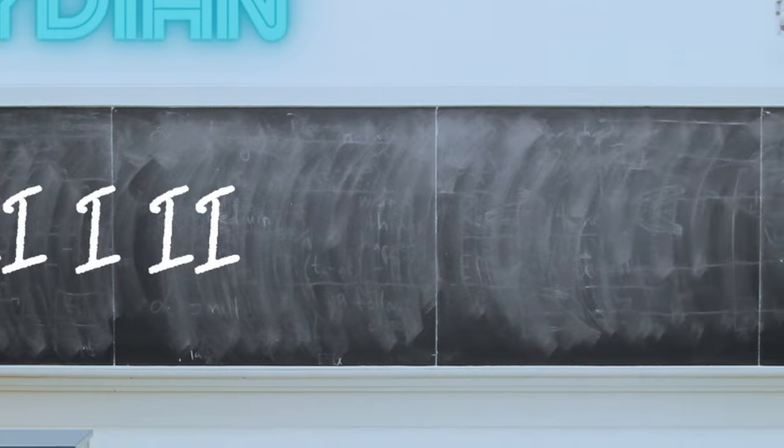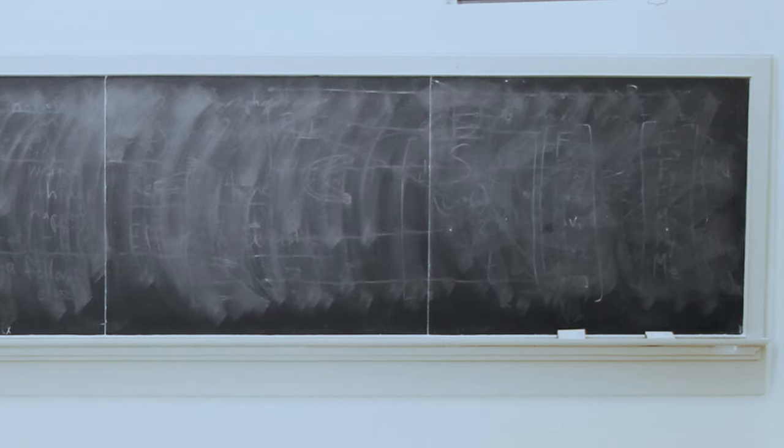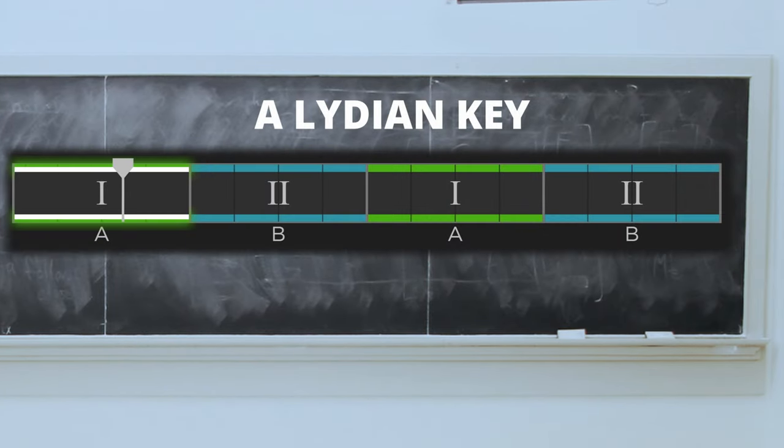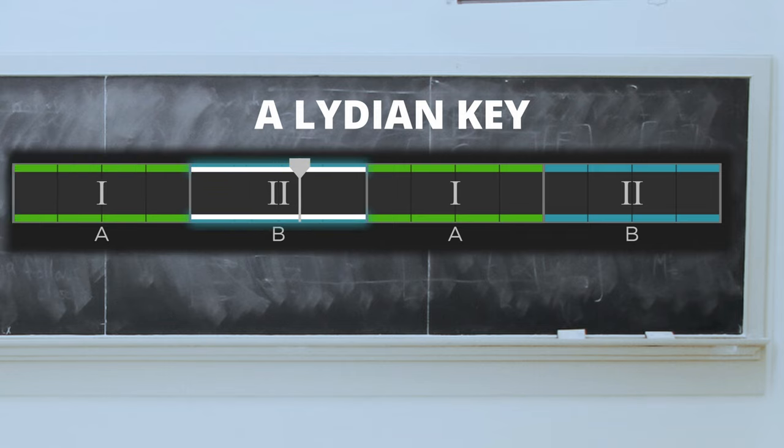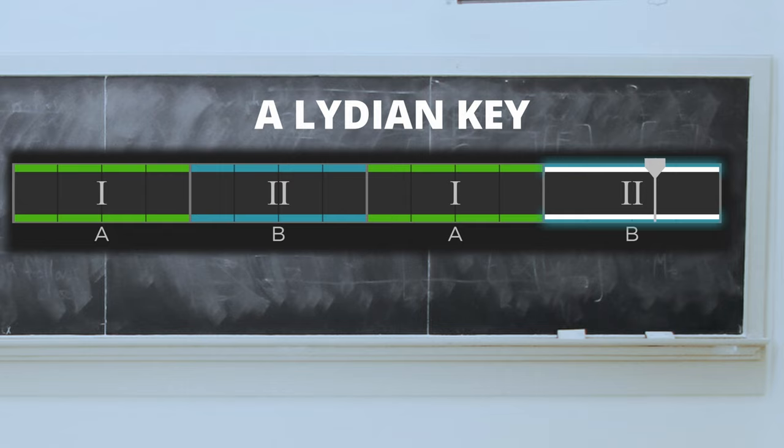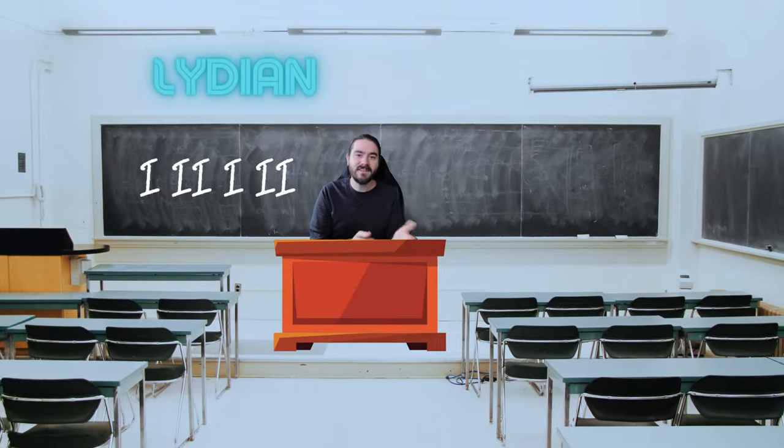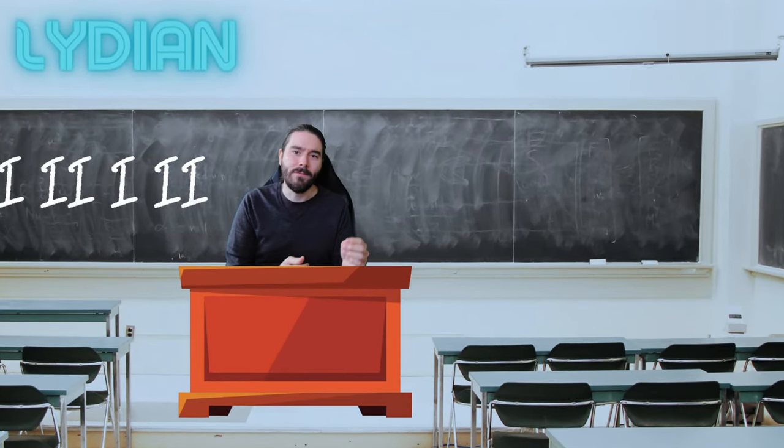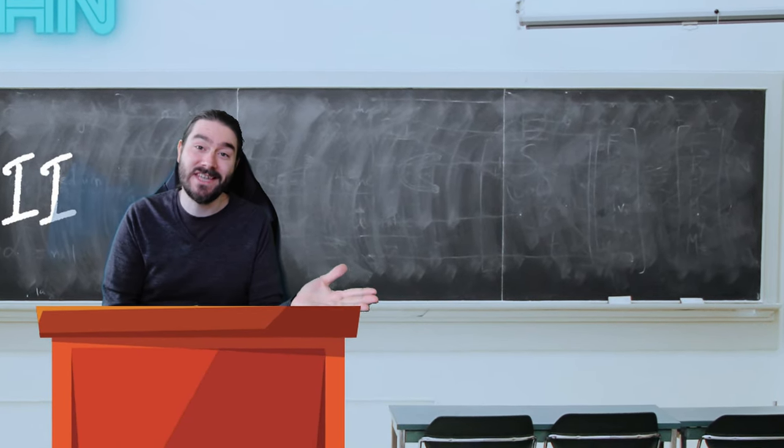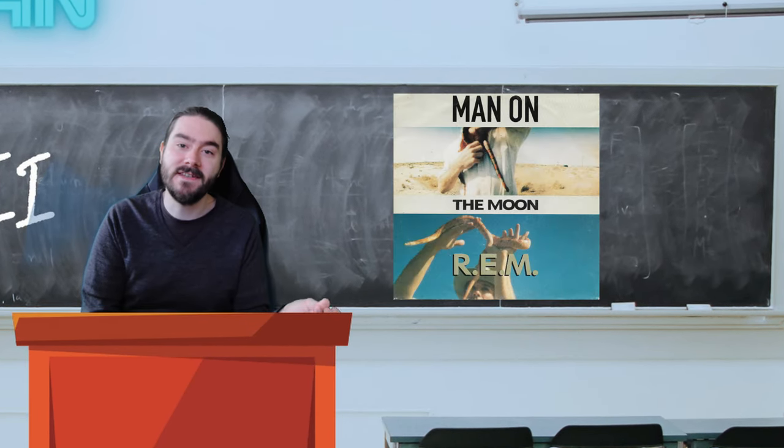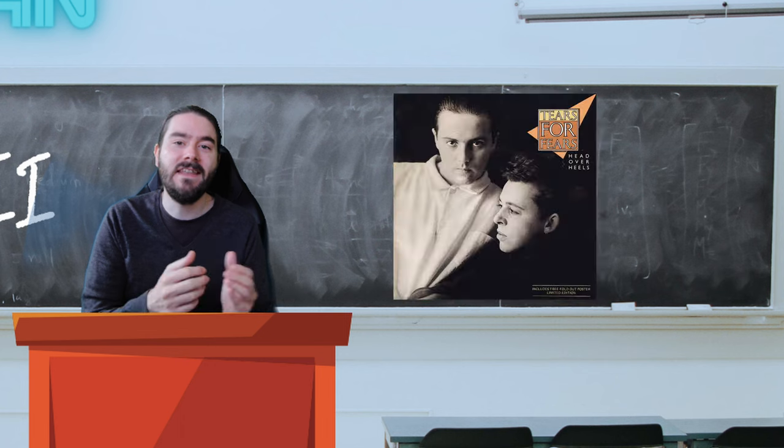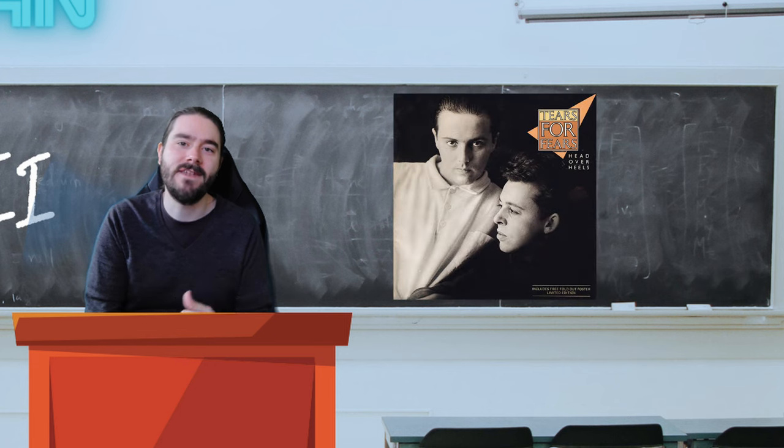First up is 1-2-1-2 progression. This simple progression is clearly Lydian, with its use of the major 2 chord that separates us from major keys. Examples include the verses of Man on the Moon by R.E.M. and the intro to Head Over Heels by Tears for Fears.